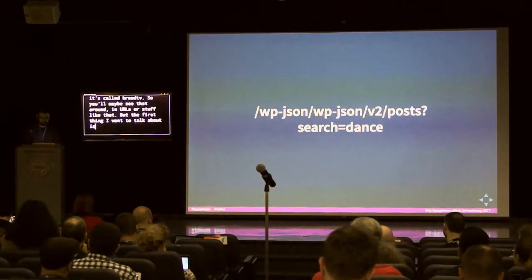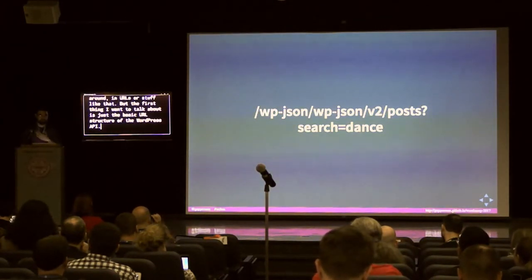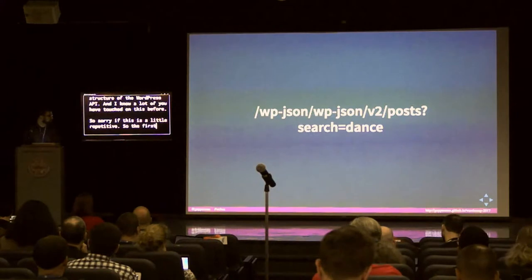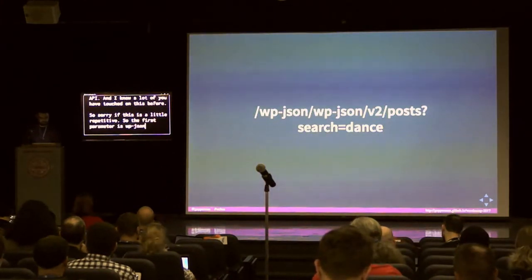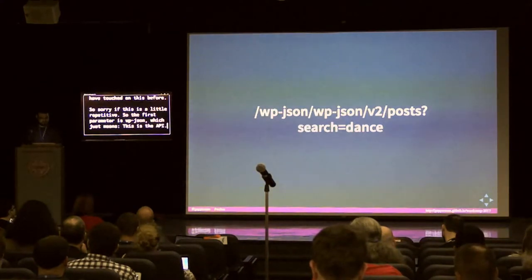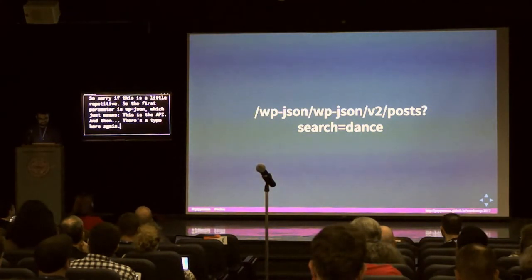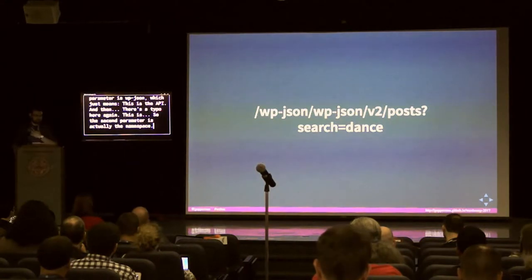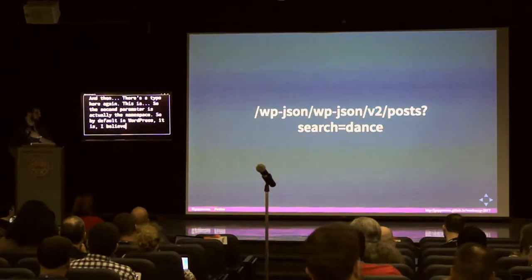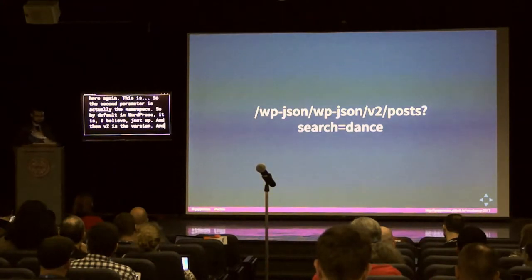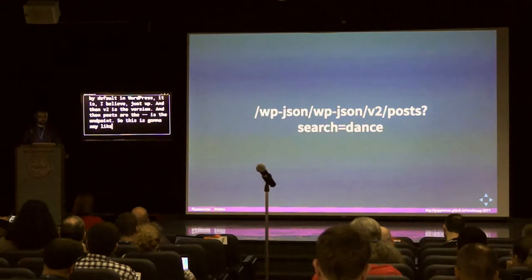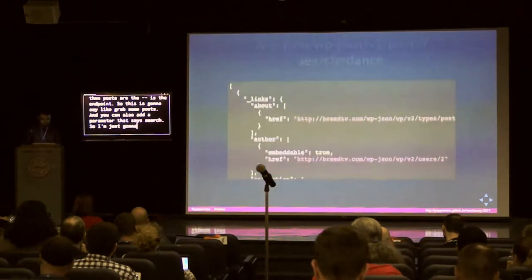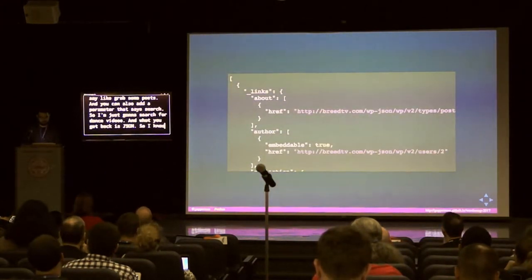It's called BreedTV. The first thing I want to cover is the basic URL structure of the WordPress API. The first parameter is wp-json, which just means this is the API. The second parameter is the namespace — by default in WordPress it's WP. Then V2 is the version, and posts is the endpoint. This will grab some posts, and you can add a search parameter — so I'm searching for dance videos. What you get back is JSON.